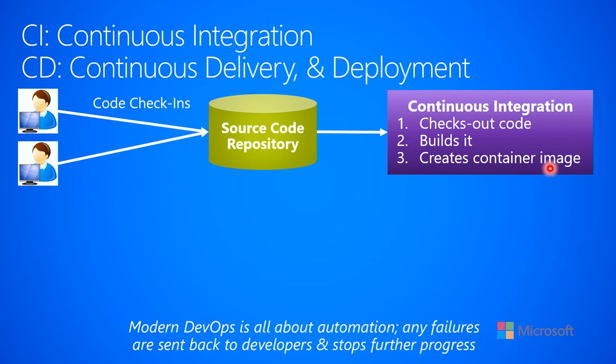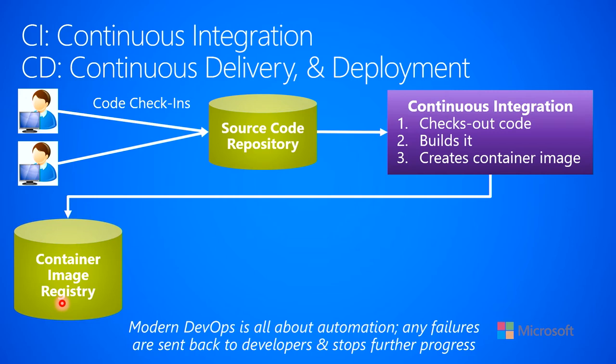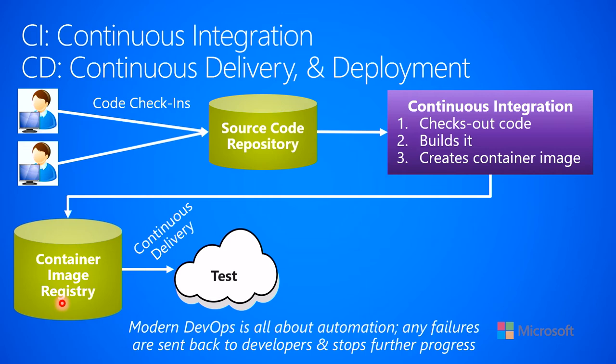That container image that gets created would then be sent into a container image registry, similar to the one I mentioned on the previous slide, like Docker Hub, for example. Now we have that container image loaded into a registry somewhere, and now we would want to begin our testing.